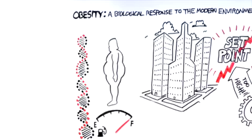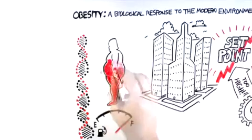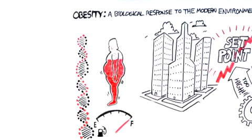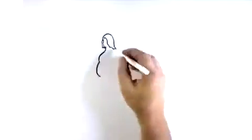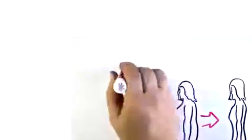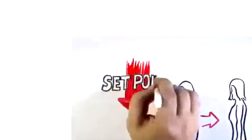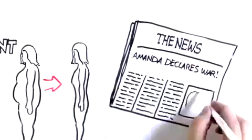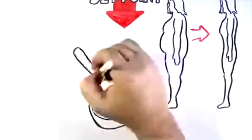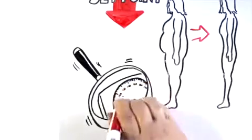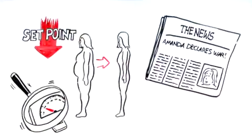Back to our car analogy. The size of Amanda's gas tank has expanded, so she carries around too much fuel. For Amanda to lose weight and keep it off, she needs to find a way to lower her set point. That is, rather than declaring war on her own biology, she needs to find a way to make her body regulate itself to a new, lower weight.